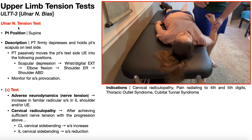The ulnar nerve tension test is not contained within the clinical prediction rule for cervical radiculopathy — that's only the median nerve tension test. However, if somebody has a cervical radiculopathy, the ulnar nerve tension test is still warranted and can give you good information. Other conditions where this is warranted include pain radiating to the fourth and fifth digits, which is the ulnar nerve distribution, thoracic outlet syndrome, and cubital tunnel syndrome.